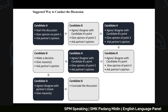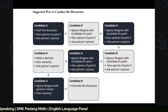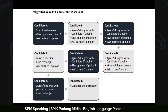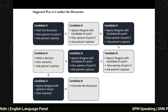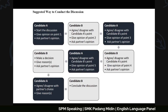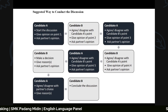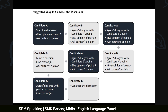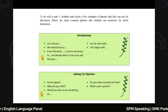The suggested flow for Part Three: Candidate A starts by giving an opinion on Point One and asks their partner's opinion. Candidate B agrees or disagrees, adds their own point, and asks back. Candidate A then agrees or disagrees with Candidate B's point, adds a third point, and passes back to Candidate B. Finally, both candidates conclude the discussion. If time runs out naturally during this flow, that is a sign your discussion was thorough.